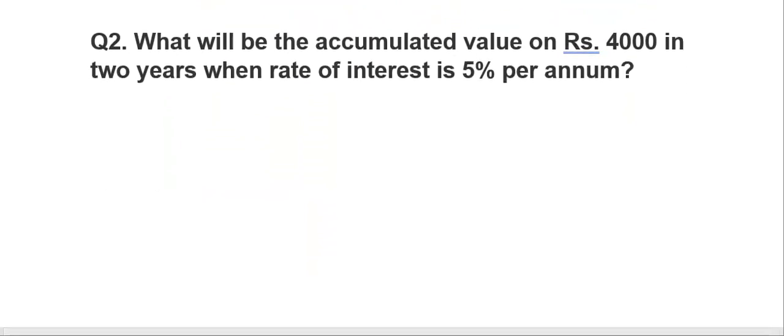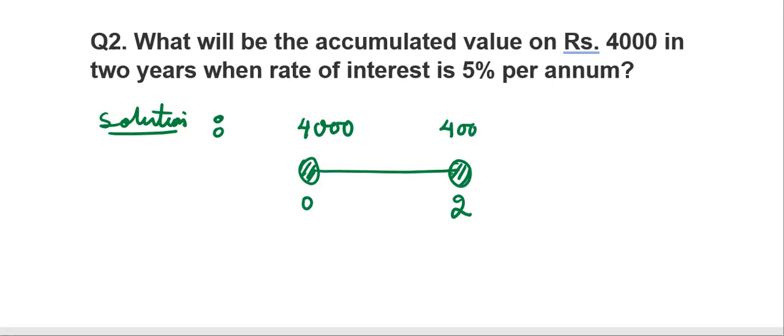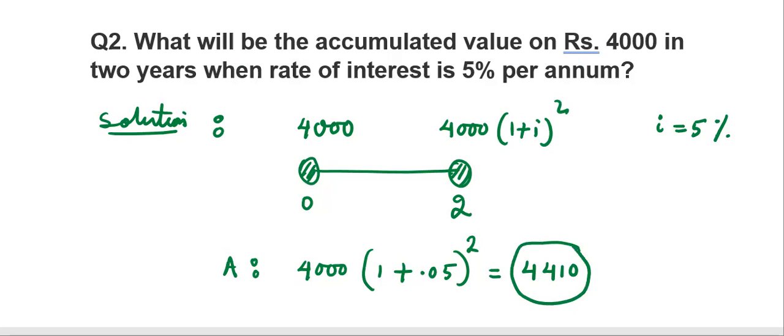Go to the second problem. What will be the accumulated value on 4000 in 2 years when rate of interest is 5% per annum? So what is given here? Initial amount 4,000, time 2 years. Accumulated value will be 4000 times (1 plus i) to the power 2. The accumulated value will be 4000 times 1.05, because i is 5% per annum, this will be 0.05, to the power 2. You find its value. You should get 4410.